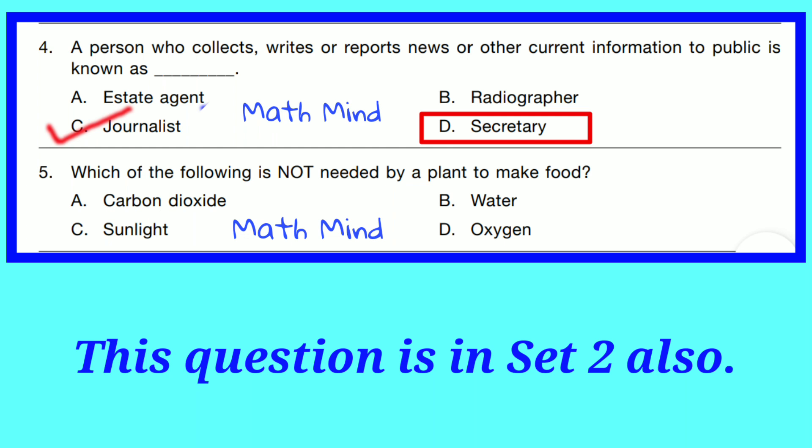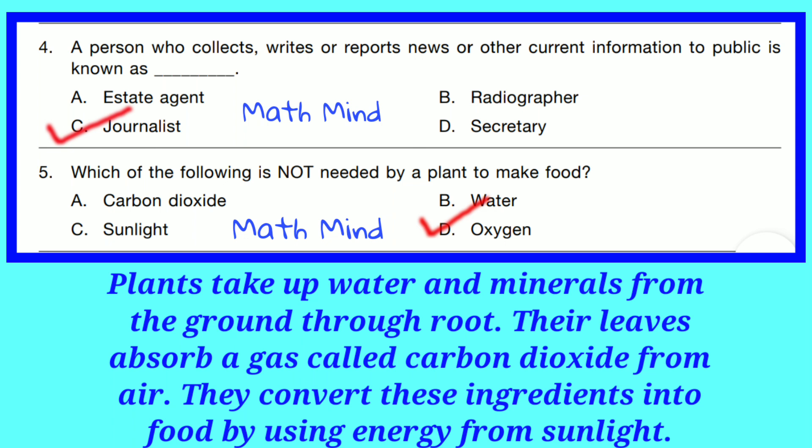Question No. 5. Which of the following is not needed by a plant to make food? Option D is correct — Oxygen. Plants take up water and minerals from the ground through roots. Their leaves absorb carbon dioxide (CO2) from air. They convert these ingredients into food using energy from sunlight — this is called photosynthesis. Oxygen is released by plants during photosynthesis, so oxygen is not needed to make food.